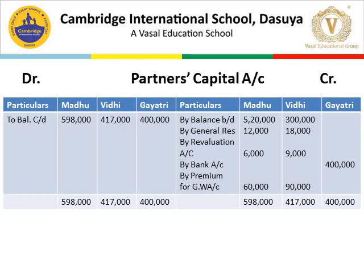Totaling the credit side: Madhu's account Rs. 5,98,000; Vidhi's account Rs. 4,17,000; Gayathri's account Rs. 4,00,000. On the debit side we write balance carried down: Madhu Rs. 5,98,000, Vidhi Rs. 4,17,000, Gayathri Rs. 4,00,000. Both debit and credit sides are now equal and the account is closed.